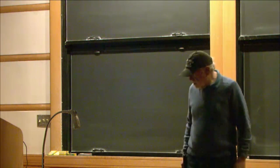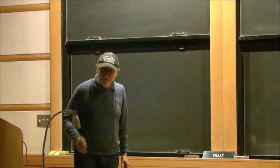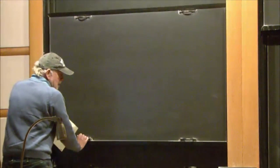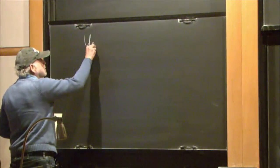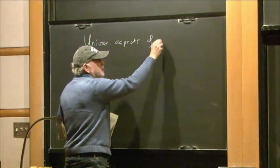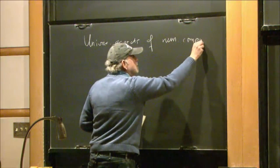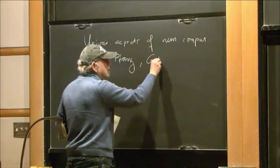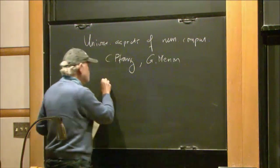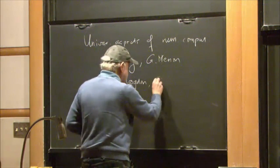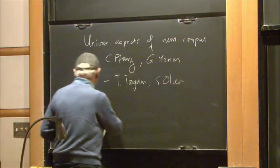The invitation to speak here, and so I'm going to be speaking about joint work with a number of people in different parts of it. This work was done with Christian Frang and Govind Menon, also with Tom Trogdon, who was here, and also with Sheehan Alva. So different parts have been done with different people.